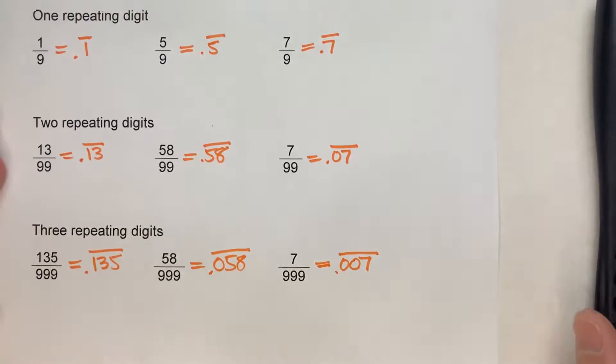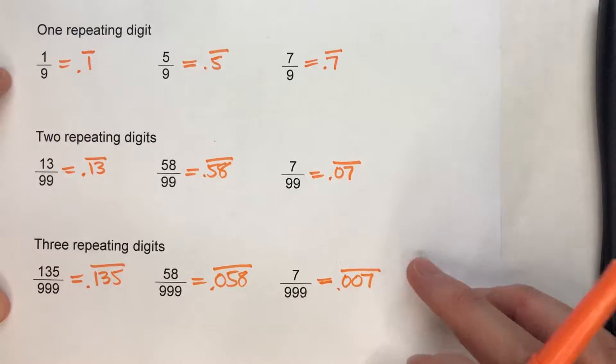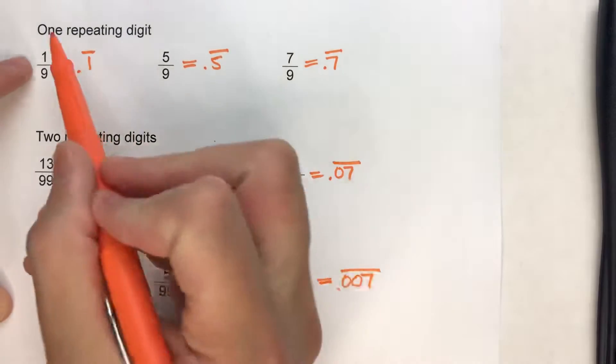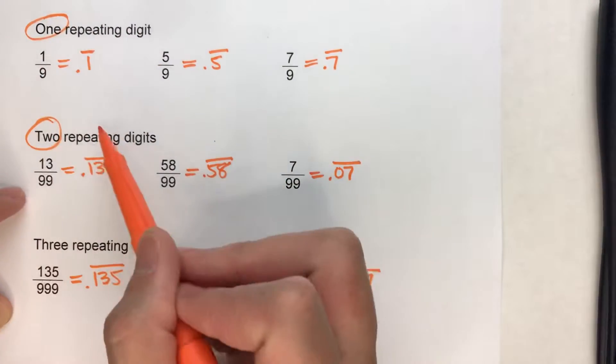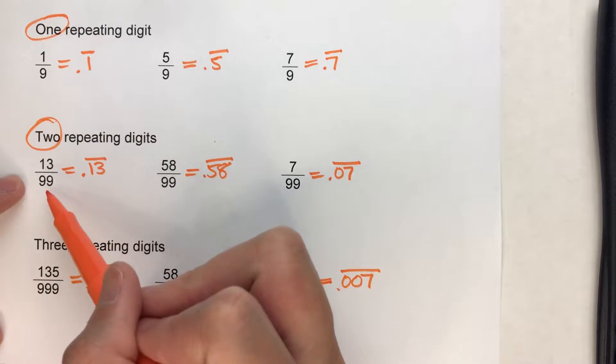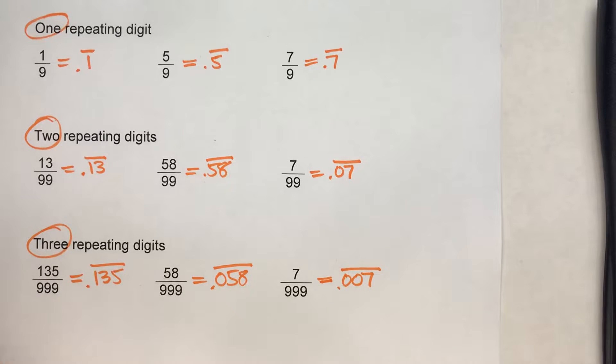So the point of this pattern is, it really allows you to work with repeating decimals. Because if you've got one repeating digit, you know the denominator is 9. If you've got two repeating digits, it's 99. And if you've got three repeating digits, then it's 999.